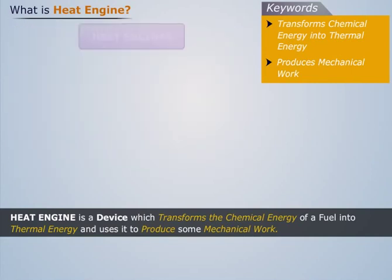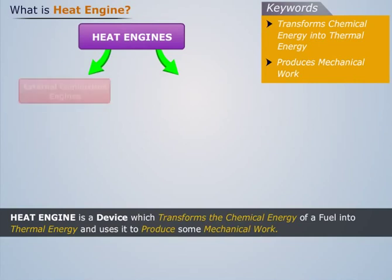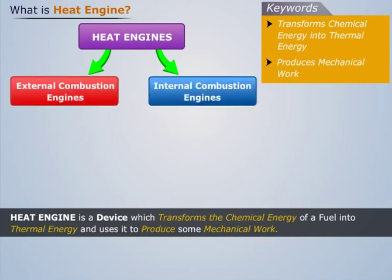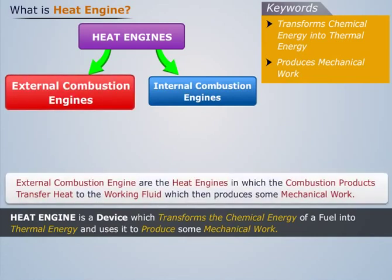Heat engines are broadly classified into two categories: external combustion engines and internal combustion engines. External combustion engines are heat engines in which the combustion products transfer heat to their working fluid, which then produces some mechanical work.